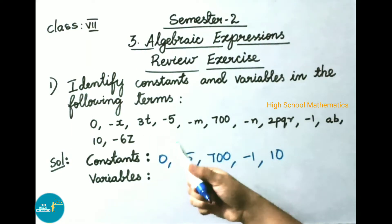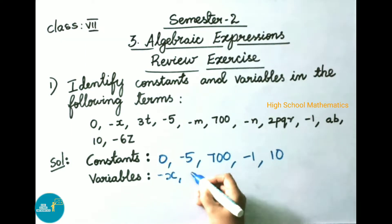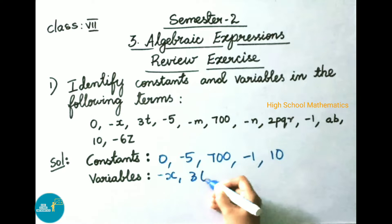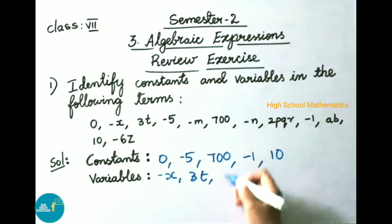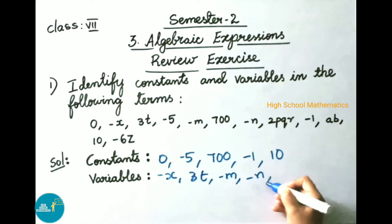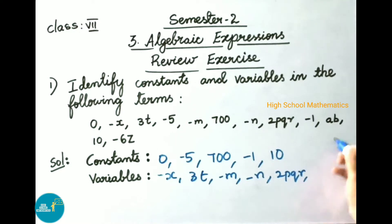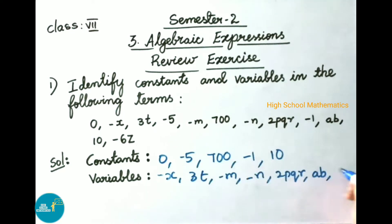The variables from the given terms are: minus x, 3t, minus m, minus n, 2p, q, r, a, b, and minus 6z. All these are variables from the given terms.